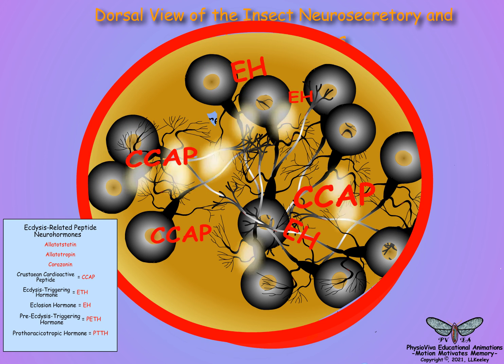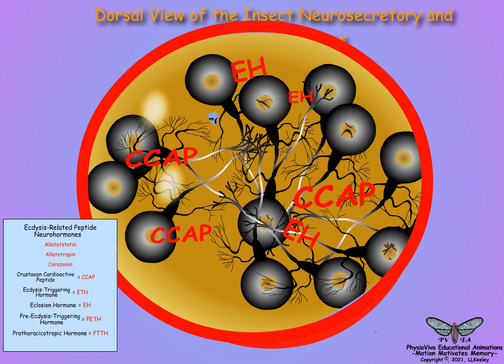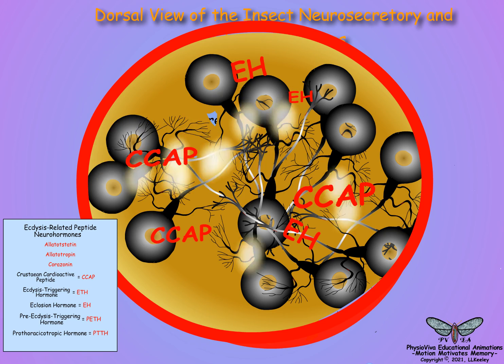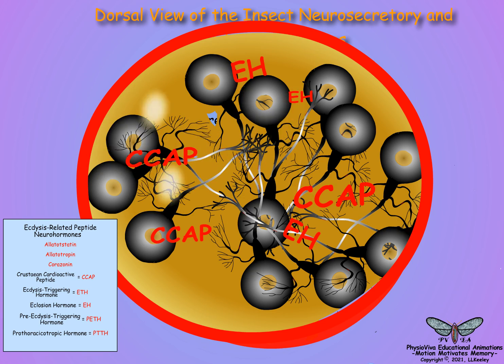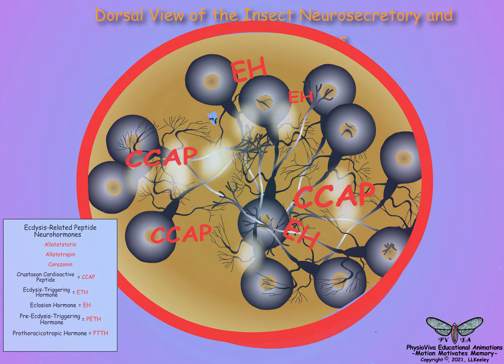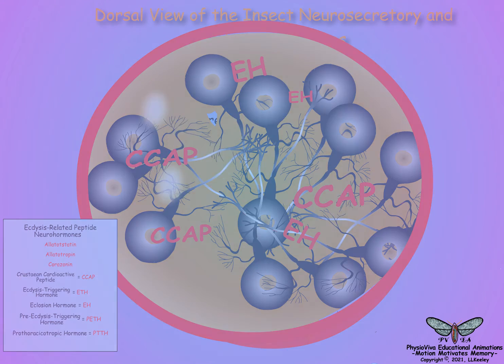Eclosion is the emergence of the adult insect from the pupal cuticle. The next scene will discuss the events of metamorphosis.